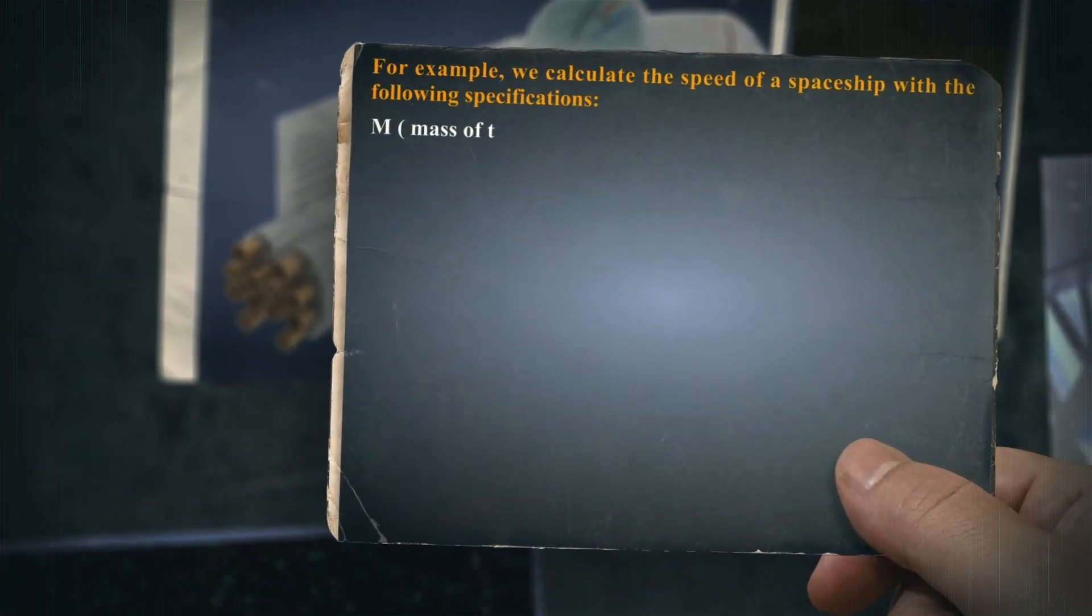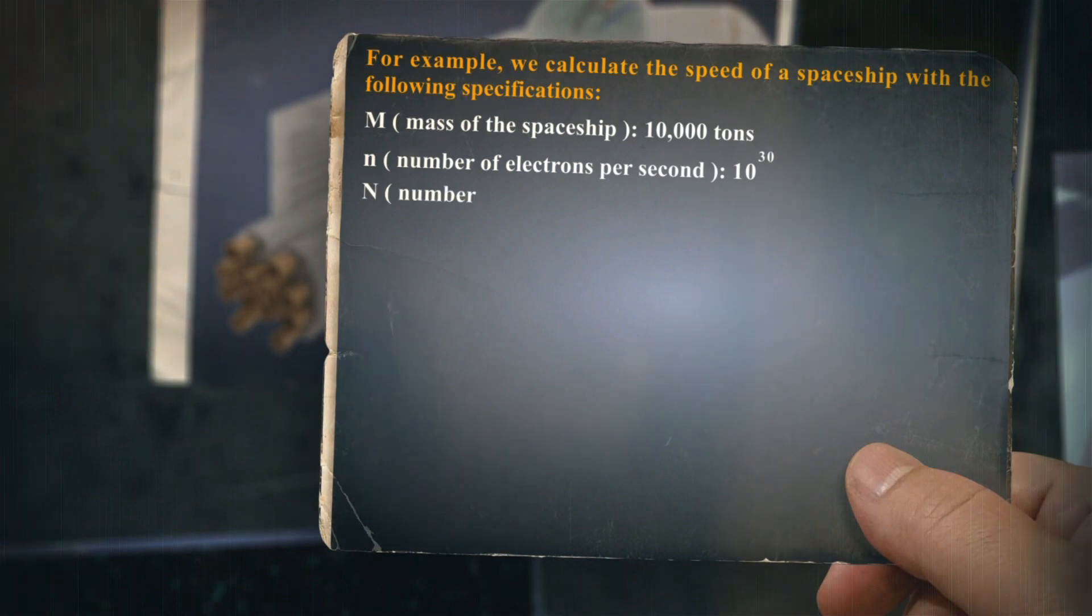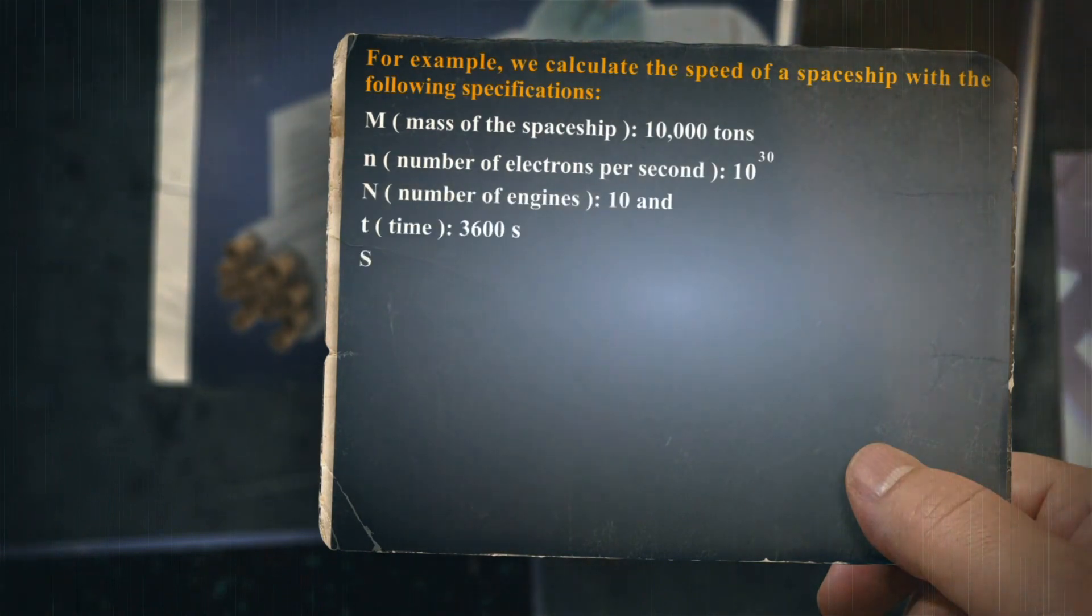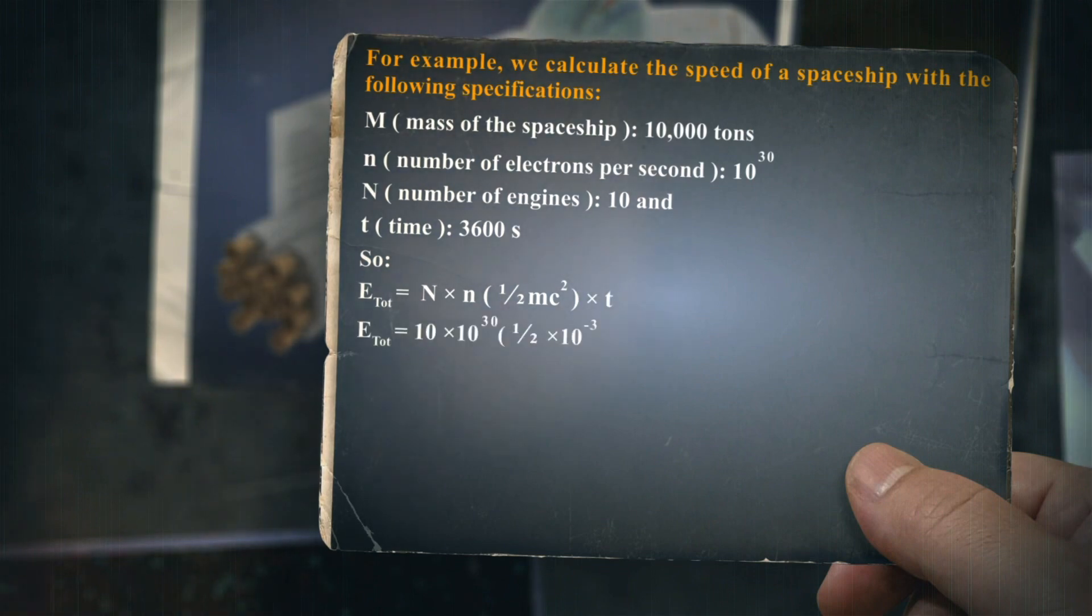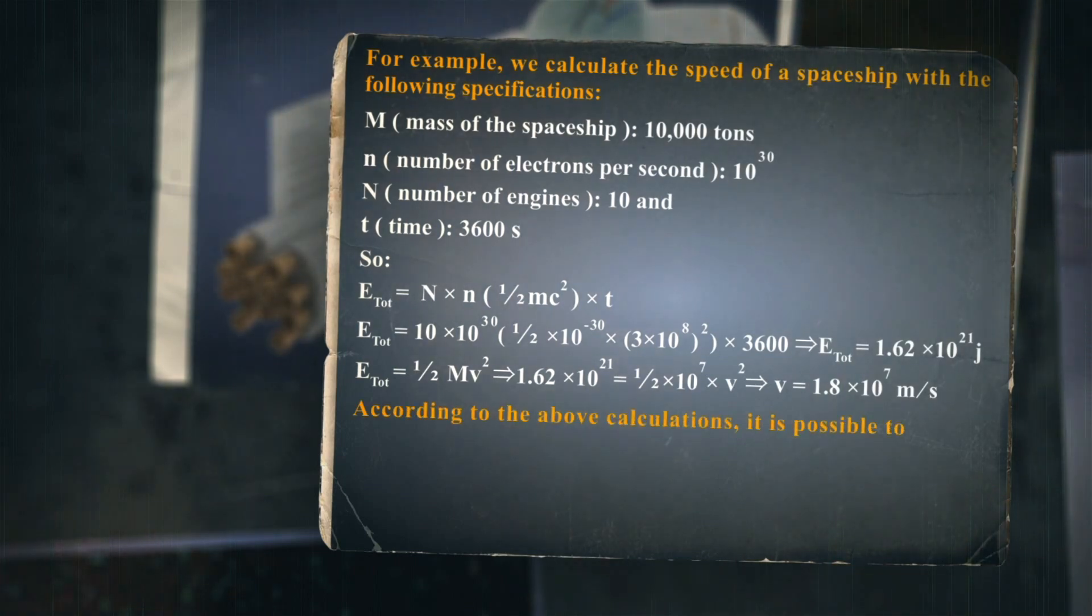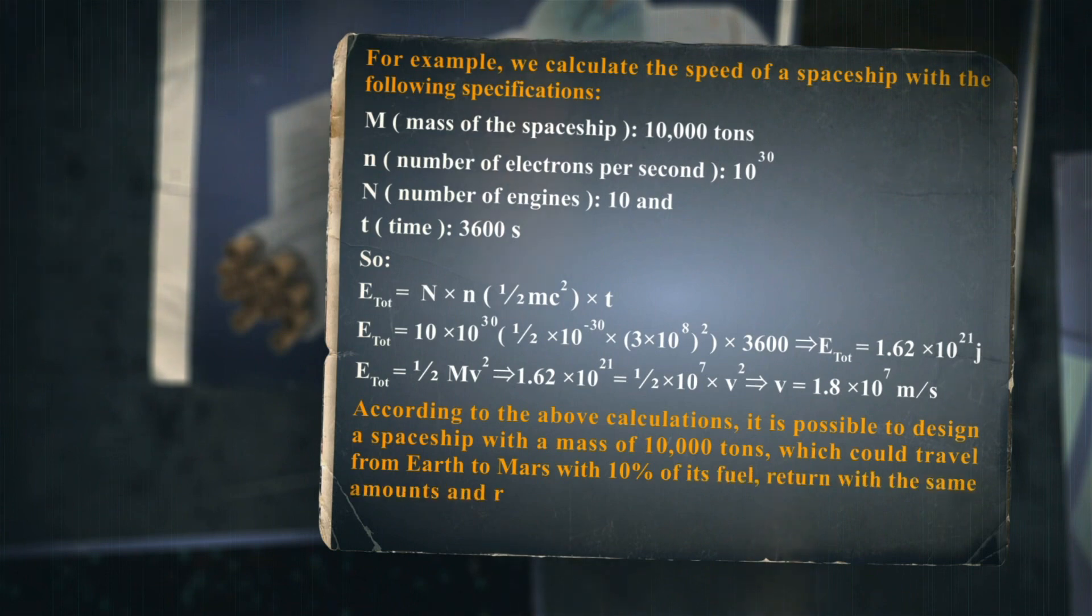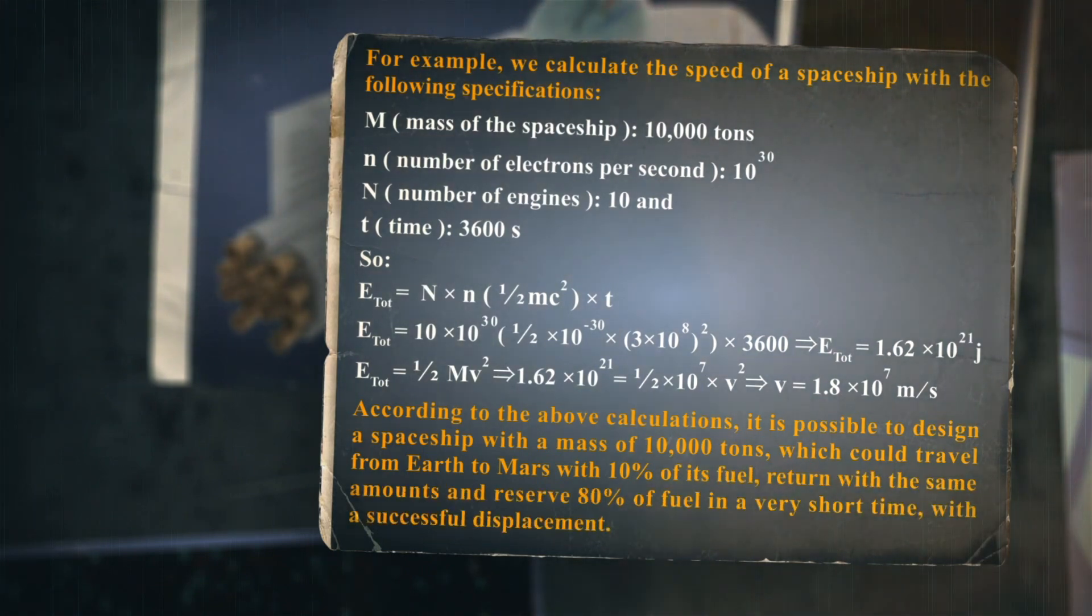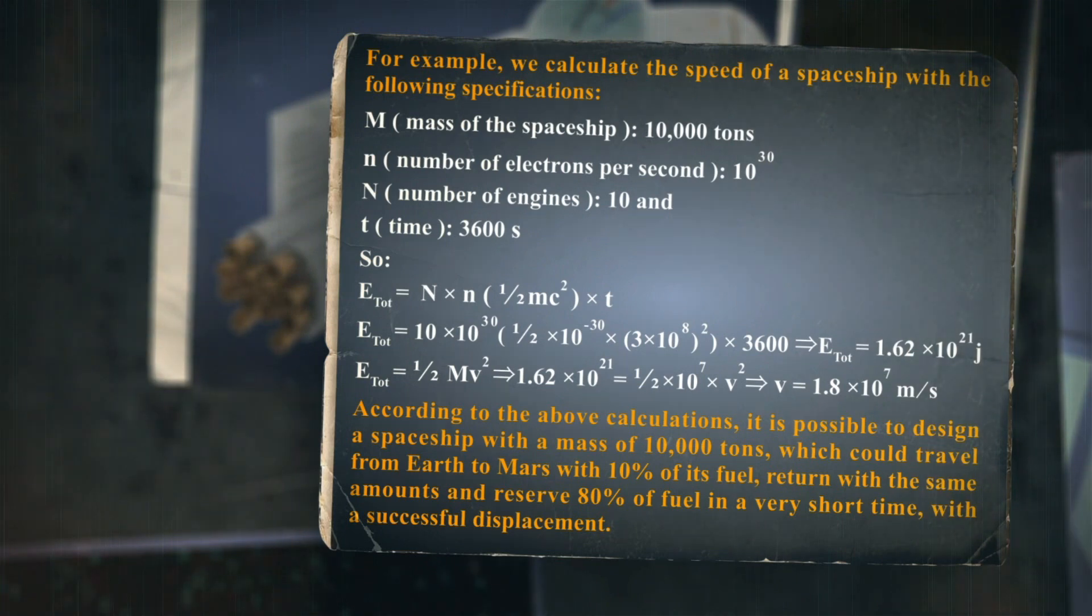For example, we calculate the speed of a spaceship with the following specifications: M (mass of the spaceship) is 10,000 tons, n (number of electrons per second) is 10^19, N (number of engines) is 10, and t (time) is 3600 s. According to the above calculations, it is possible to design a spaceship with a mass of 10,000 tons, which could travel from Earth to Mars with 10% of its fuel, return with the same amounts, and reserve 80% of fuel in a very short time with successful displacement.